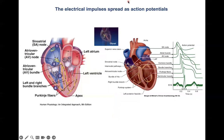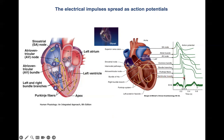The impulse is spread as action potentials with different patterns. For instance, the SA node has no resting membrane potential, compared to the action potential in the ventricles, which has a stable resting membrane potential. The details of the action potentials will be discussed later.